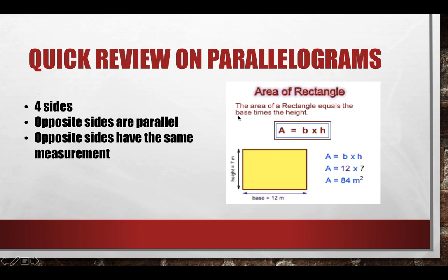We also talked about how to find the area of rectangles, which is multiplying our base by our height. So in this case we would multiply 12 times 7 and we would get 84 meters squared. We could also say 7 is our base and 12 is our height — it doesn't really matter, we would still get the same answer in the end.